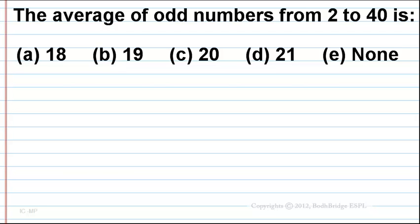The average of odd numbers from 2 to 40 is: here we have five options - option A 18, option B 19, option C 20, option D 21, and option E none. So we want to find the average of odd numbers. Let's look at the solution.